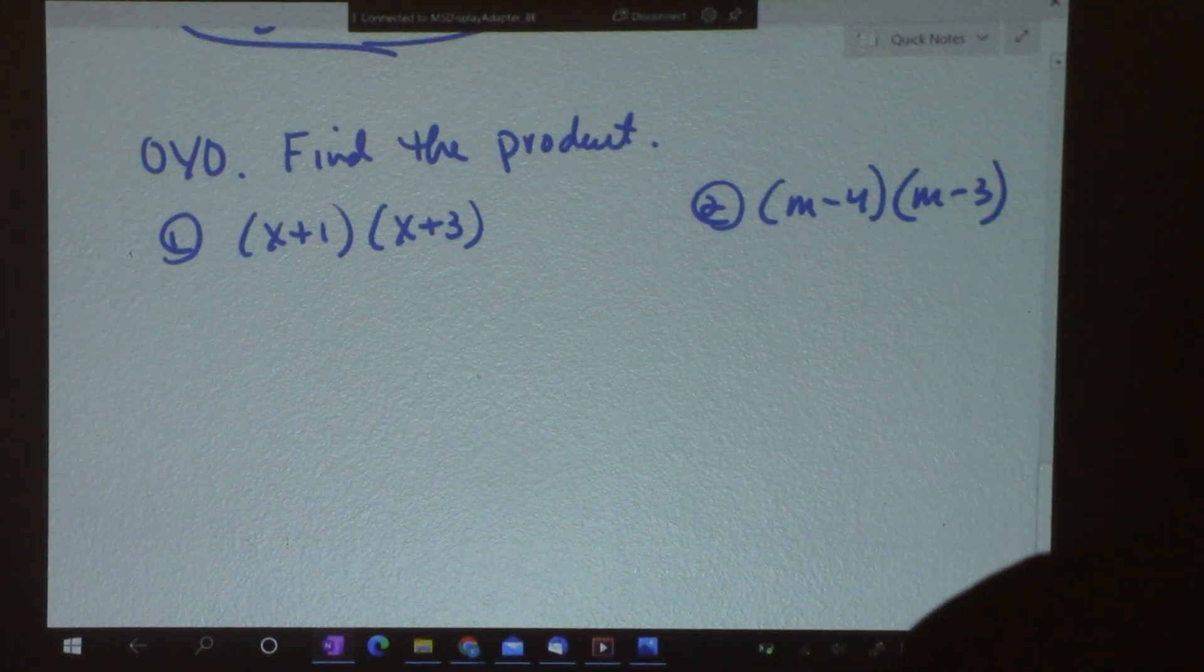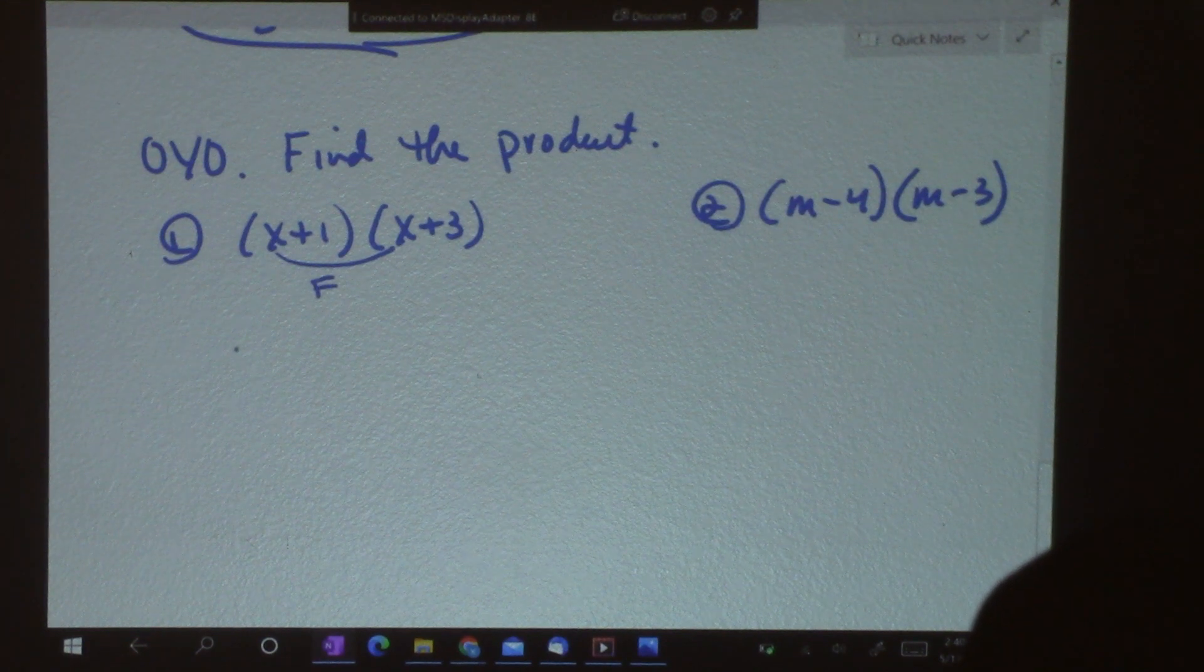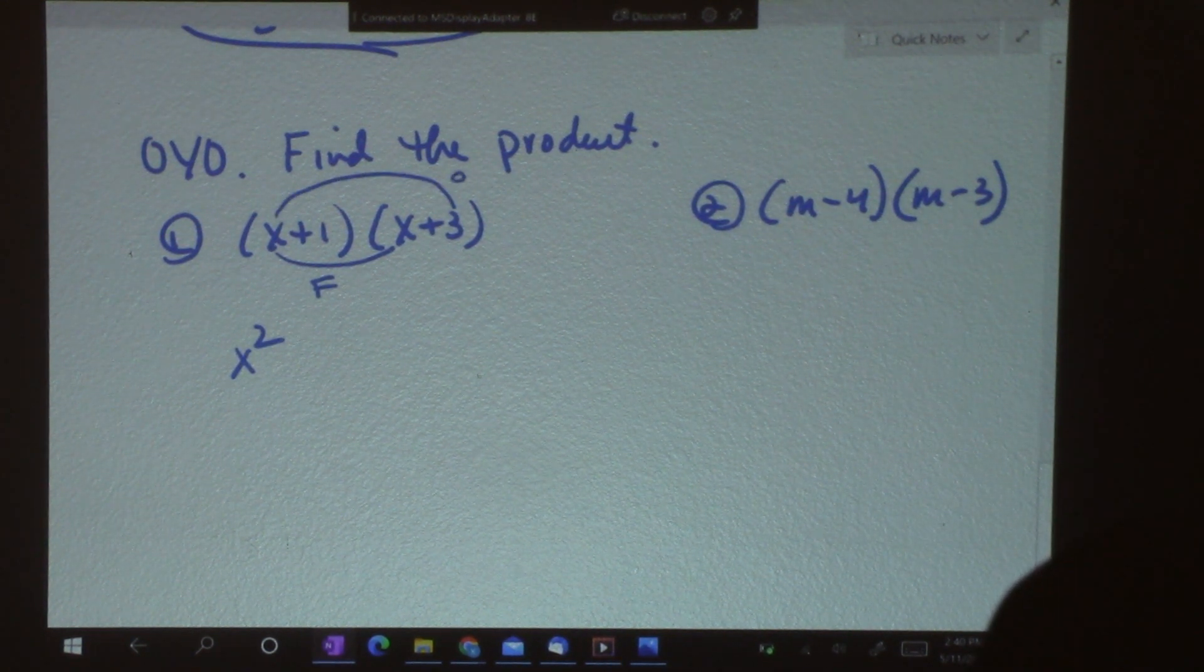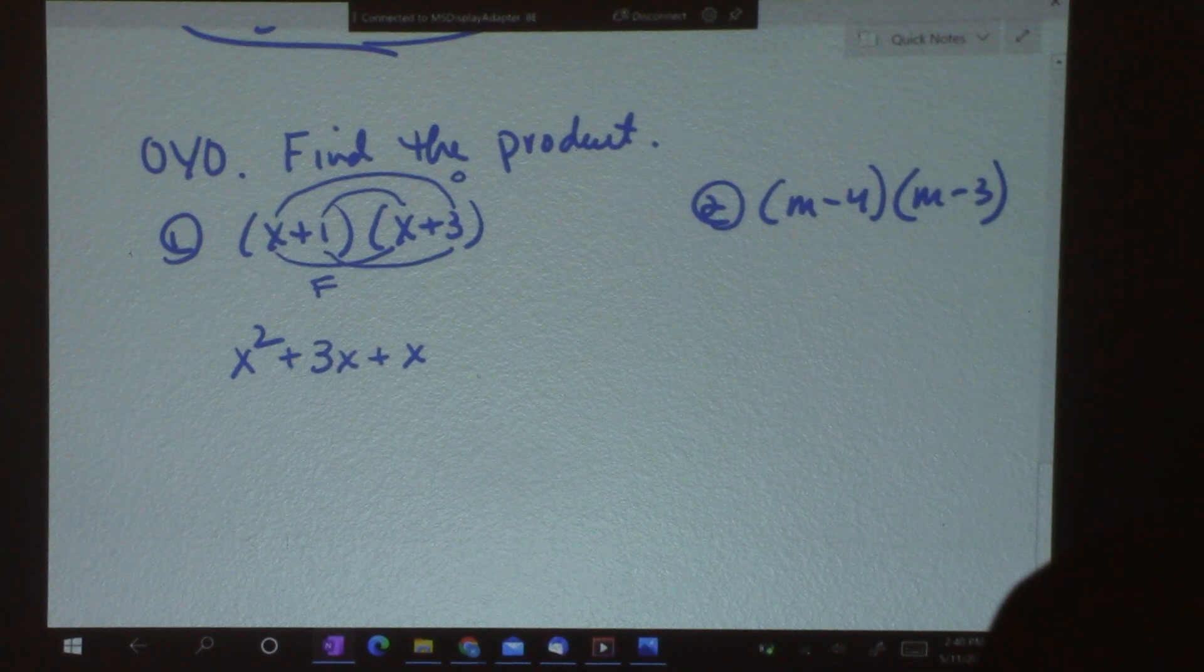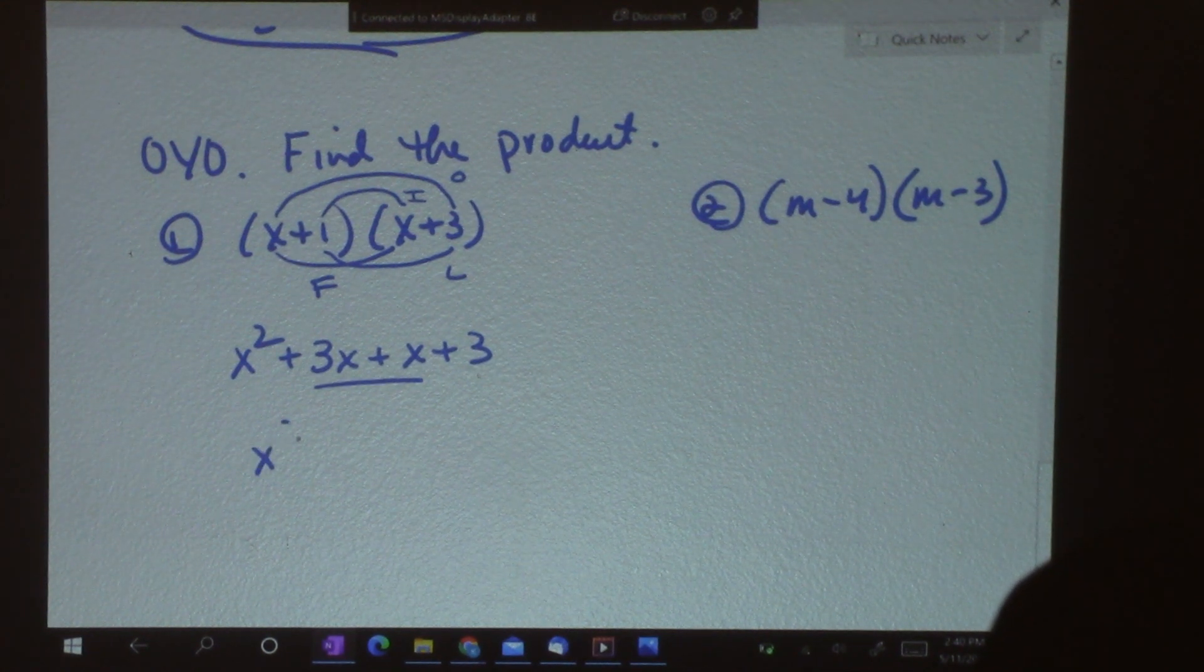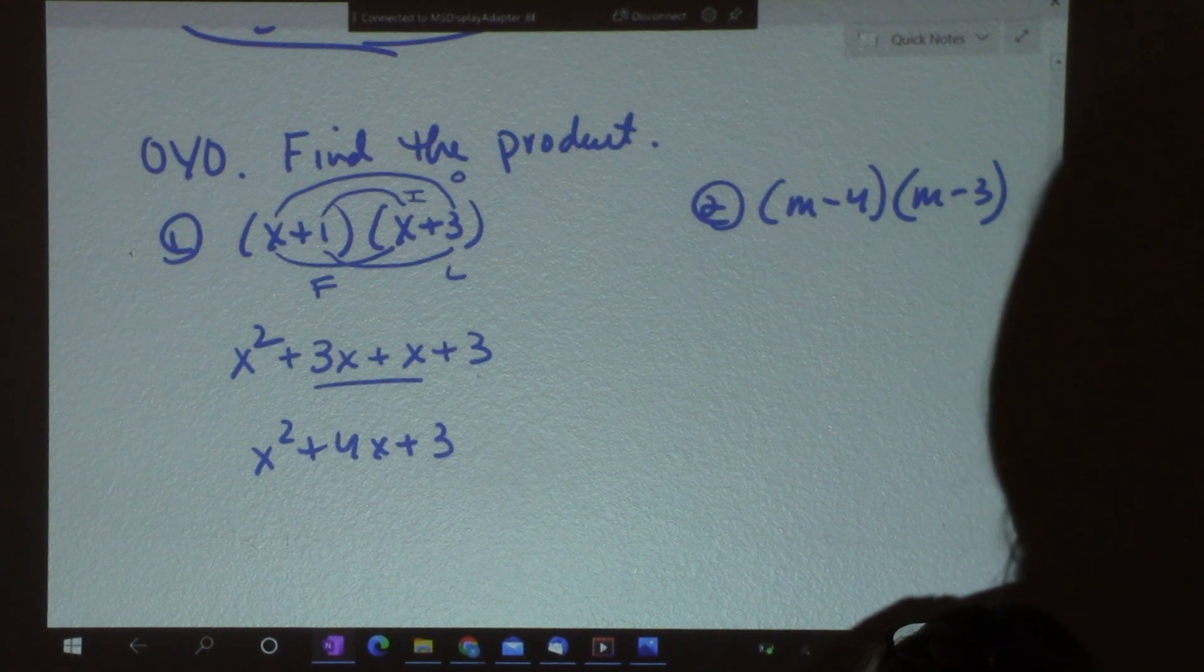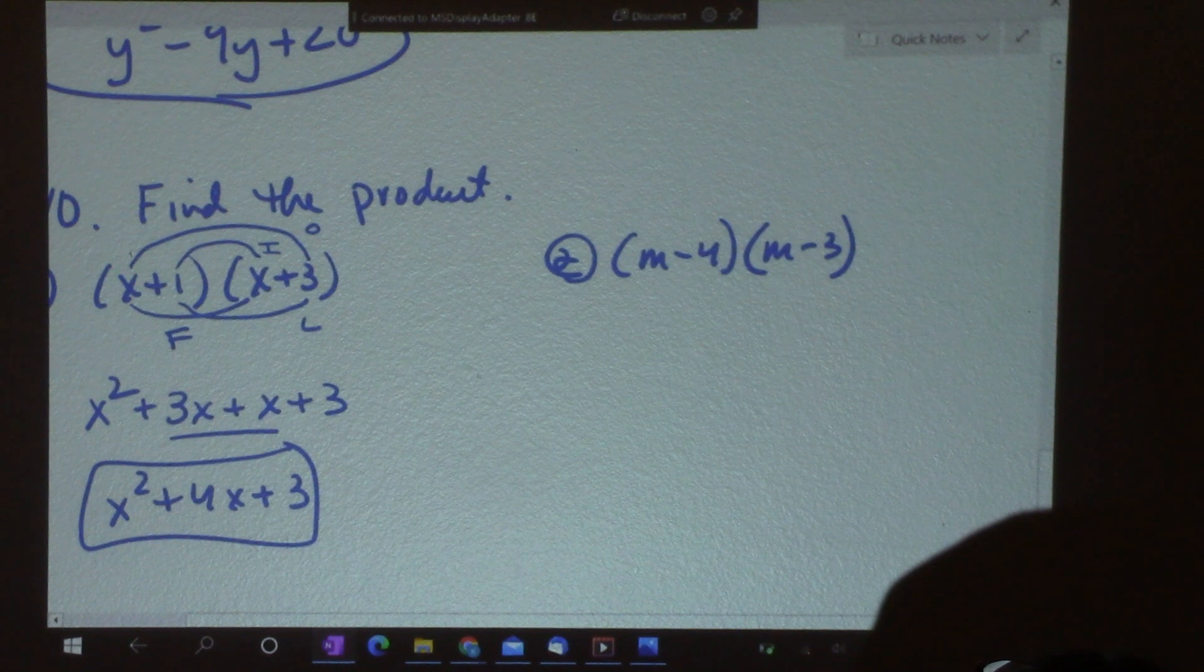Okay. So, let's go over these. x times x is x squared. That's first. Outside is x times 3. Inside is 1 times x. And last is 1 times 3. So, I can add these two in the middle. And I get x squared plus 4x plus 3. So, that's my first answer.